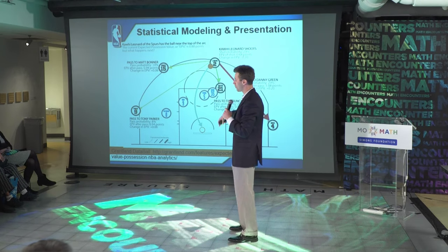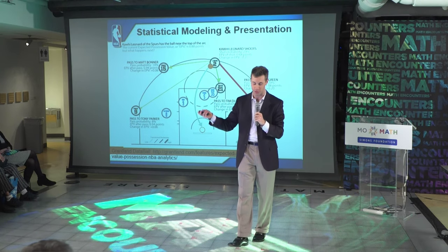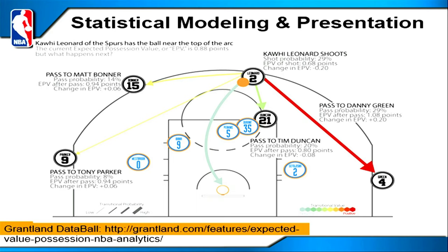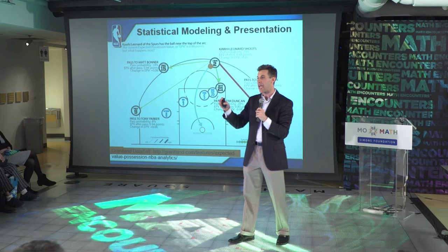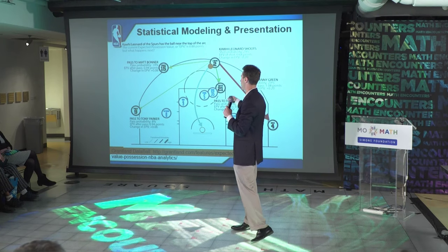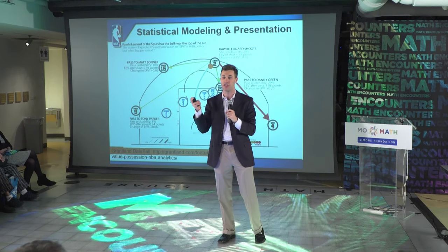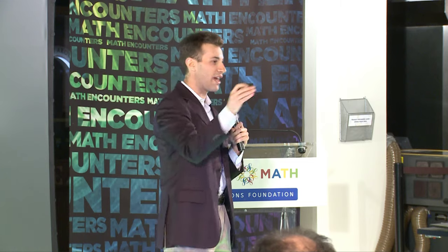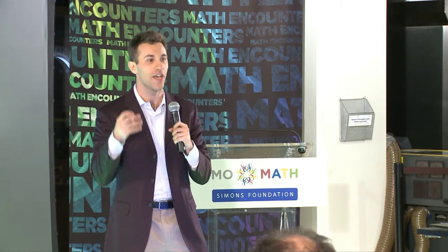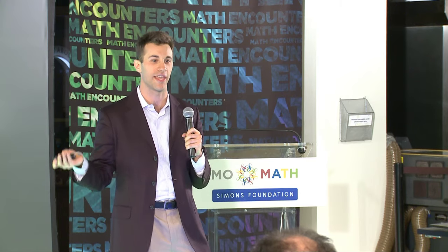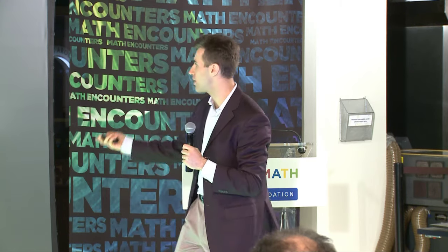A group at Harvard called the XY Hoops Research Group took this SportVU data and did tremendous research. They basically said: when a player has the ball at the top of the key, he could do one of a bunch of different things — and how does the expected point value of the possession change when he does A, B, C, D, or E? Based on the decision he actually makes, you can determine if he made the right decision. If you do that for every player over every possession, you can determine who the best decision makers are in the NBA.